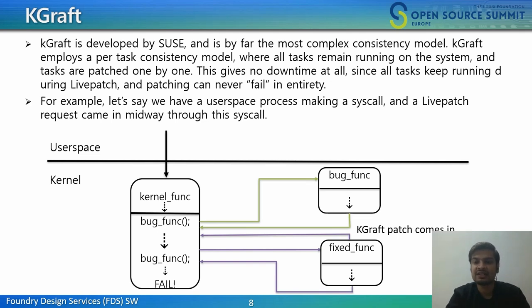Kgraft — this is the second implementation of livepatch. Kgraft is developed by SUSE and is by far the most complex consistency model. Kgraft is a live patching feature for runtime patching of the Linux kernel without stopping the kernel, which maximizes system uptime and availability — important for mission-critical systems. By allowing dynamic patching of the kernel, it also encourages users to install critical security updates without deferring them to a scheduled downtime. Kgraft employs a per-task consistency model where all tasks remain running and are patched one by one, giving no downtime at all.